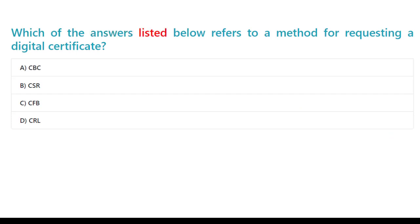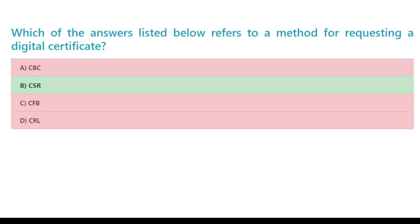Which of the answers listed below refers to a method for requesting a digital certificate? A. CBC. B. CSR. C. CFB. D. CRL. The correct answer is B. CSR.